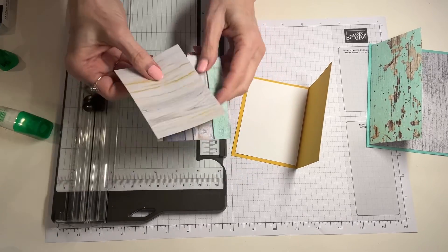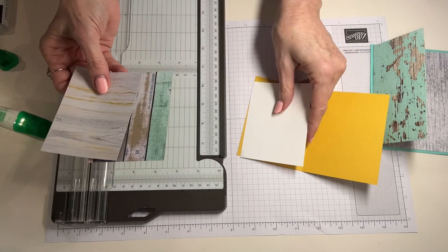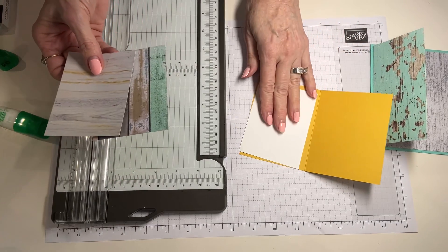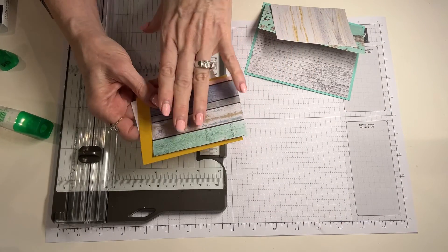So the exact same size, one measurement, three different layers as the white layer for the inside of the card. Let's go ahead now and we're going to assemble these parts.